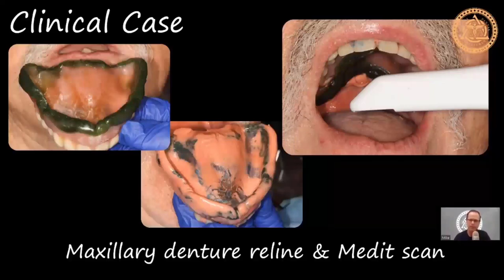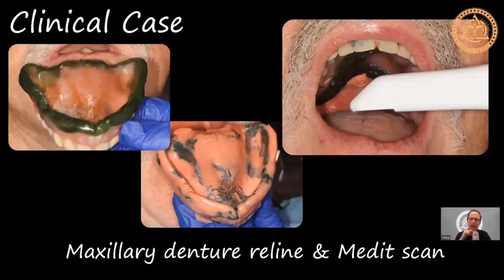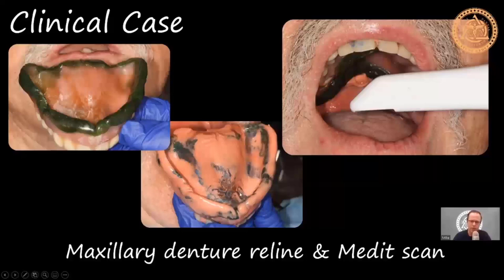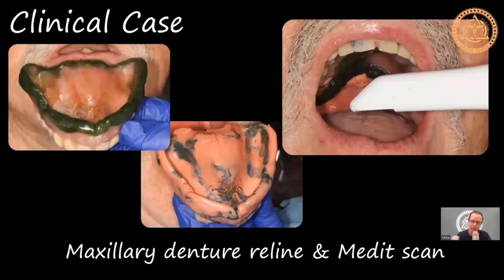We do what's called a closed mouth reline impression: impression material inside the denture, patient bites down at centric, then border mold — stick out the tongue, swallow, open really big, move the jaw side to side to get notches in the impression. You're doing the impression at a closed bite, so in theory you haven't opened the vertical too much — maybe a quarter to a half millimeter. You now have the patient's denture teeth, soft tissue impression, and borders all in one.